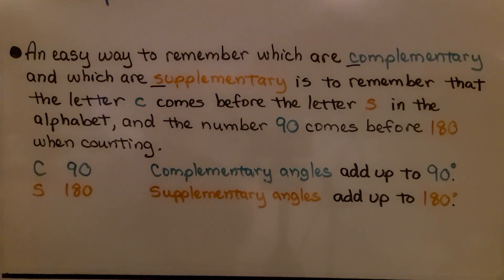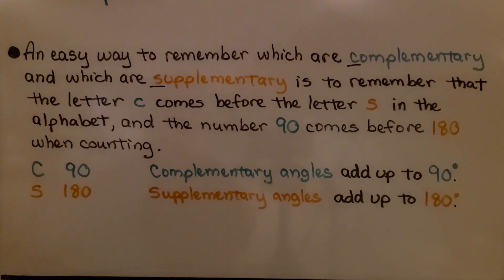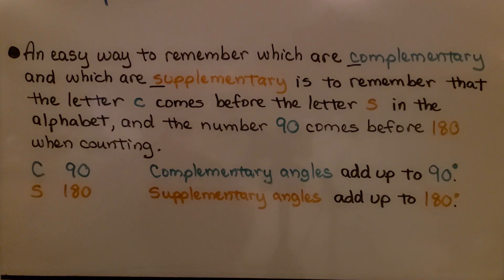An easy way to remember which is complementary and which is supplementary: the letter C for complementary comes before the letter S for supplementary in the alphabet, and the number 90 comes before 180 when counting. So C goes with 90 — complementary angles add up to 90 degrees — and S goes with 180 — supplementary angles add up to 180 degrees.